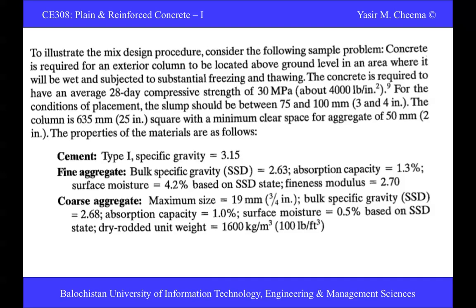For coarse aggregates, the maximum size is given as 19 mm. If it's not given, you'd need to determine it from the cross-section of the member. Coarse aggregate specific gravity is 2.68, absorption capacity is 1%, surface moisture is 0.5%, and its dry rodded unit weight is 1600 kg/m³.